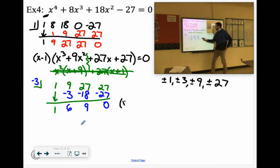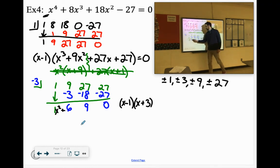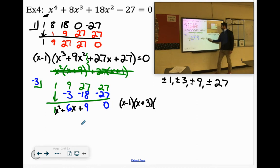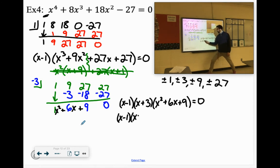So we have the x minus 1. Now we've got the x plus 3. Now what's left is 1x squared plus 6x plus 9, x squared plus 6x plus 9. That one we can factor. Factors of 9 that add up to 6 are 3 and 3. So we've got x minus 1. We've got the x plus 3. We've got the x plus 3. And we've got the x plus 3.